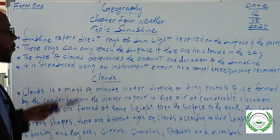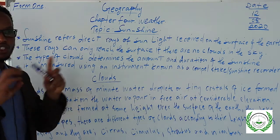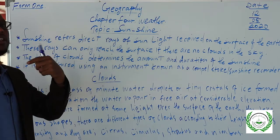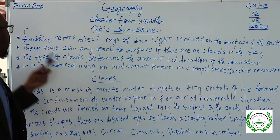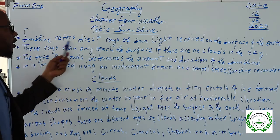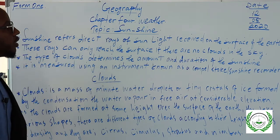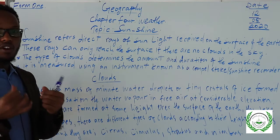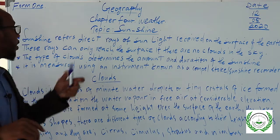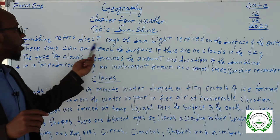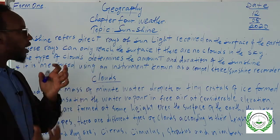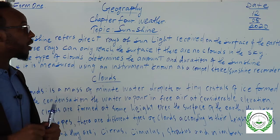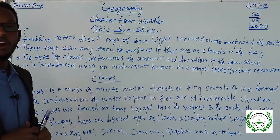Sunshine — the meaning of sunshine. Sunshine refers to the rays from the sun. Sunshine refers to the direct rays of sunlight received on the surface of the earth. Sunshine means direct rays of sunlight when they come to the surface of the earth.